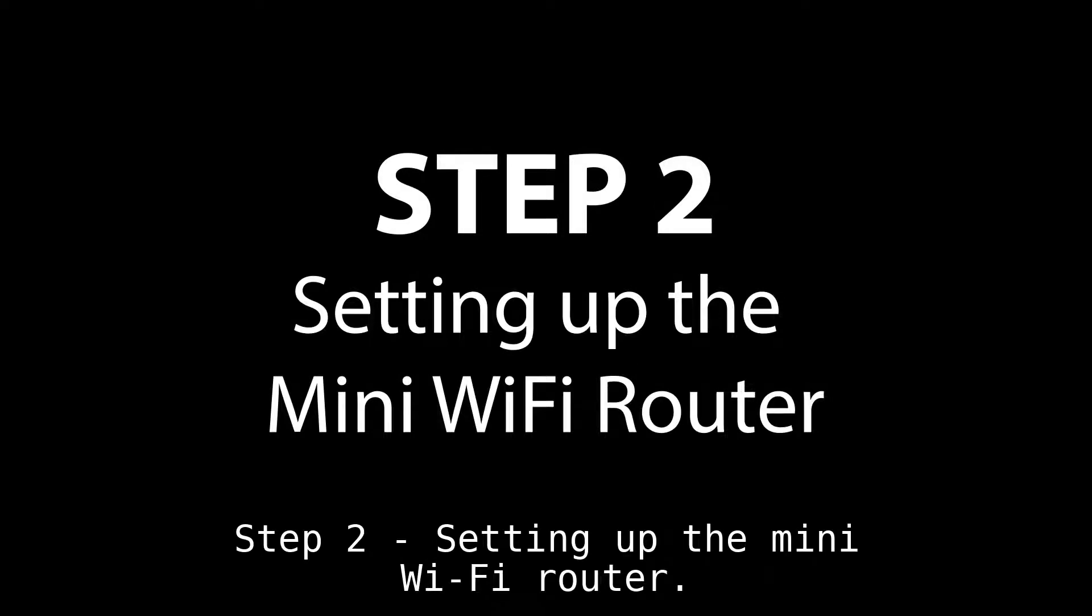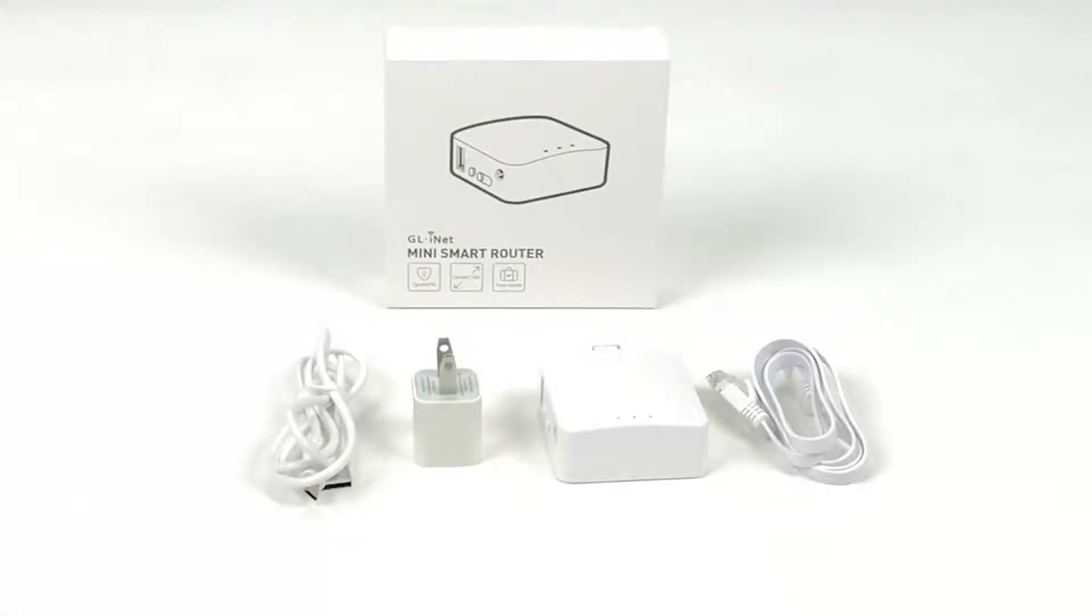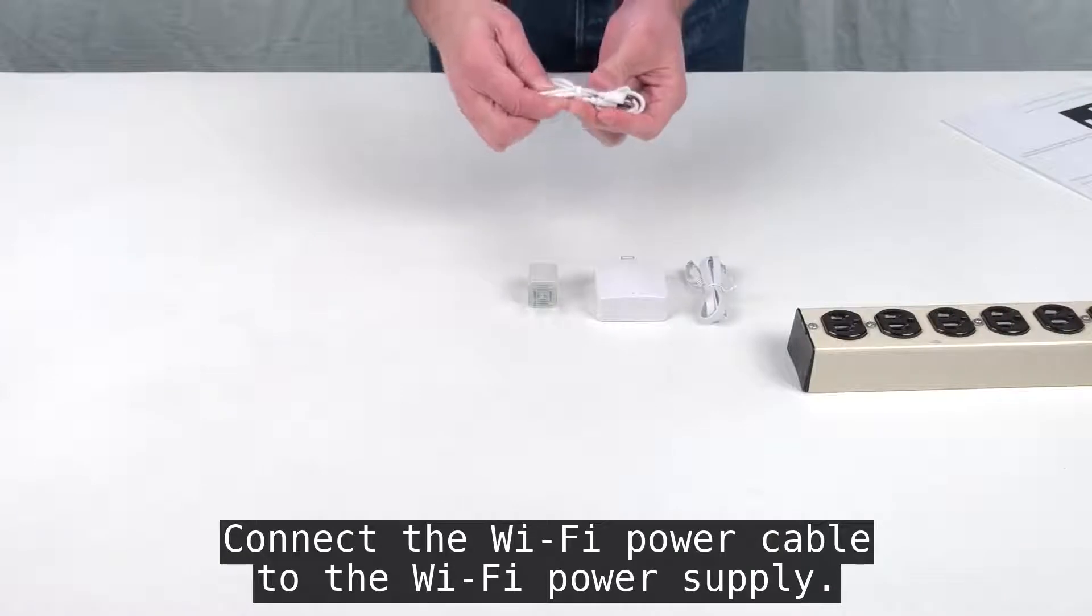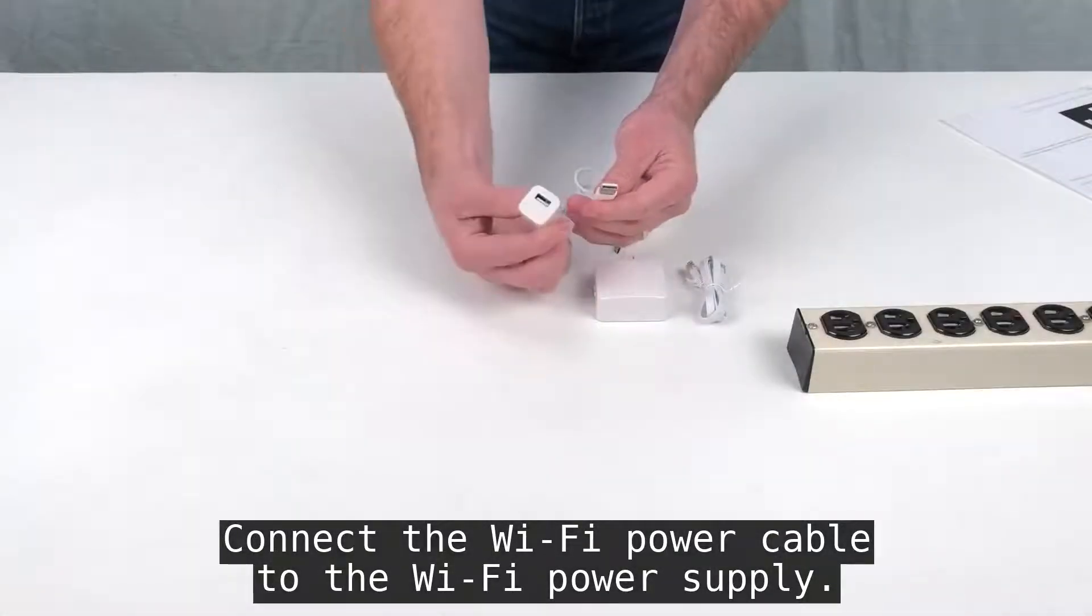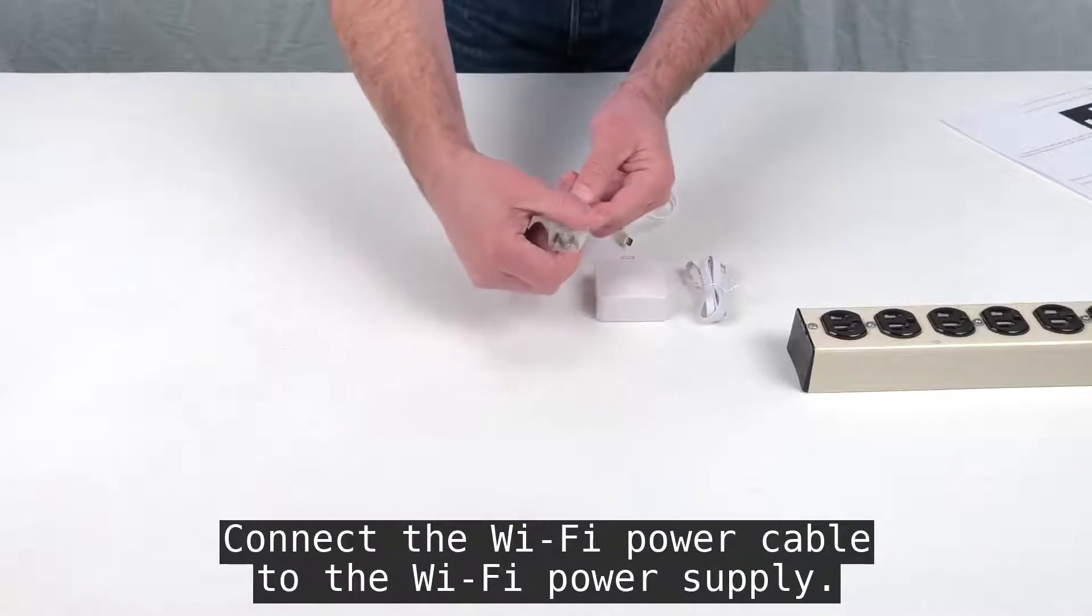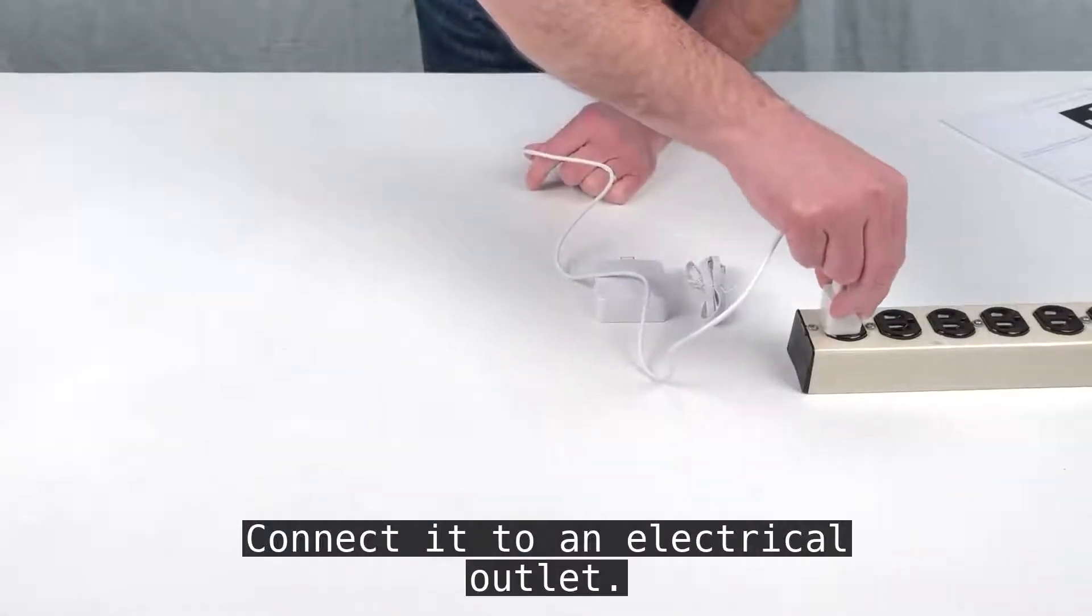Step 2: Setting up the Mini Wi-Fi Router. Connect the Wi-Fi power cable to the Wi-Fi power supply, then connect it to an electrical outlet.